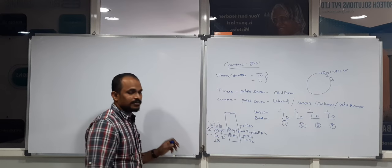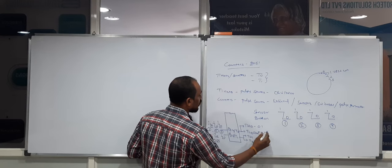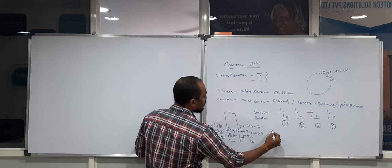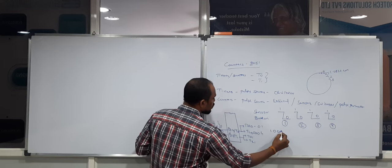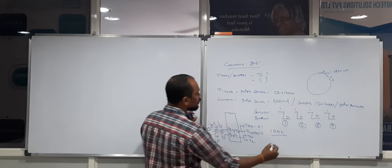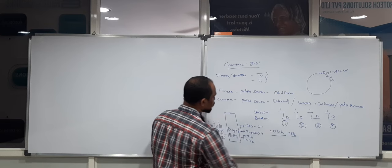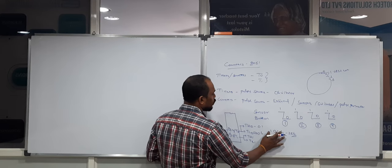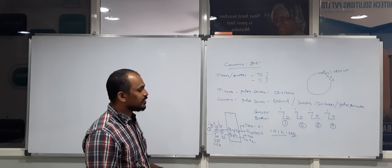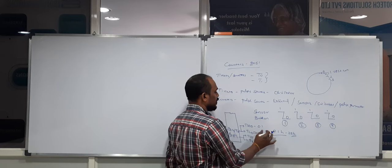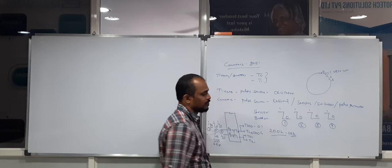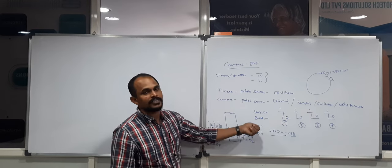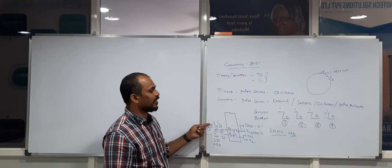On the 256th pulse, the higher byte is incremented by 1 and the lower byte is overwritten with 0x00, giving a combined value of 0x100, which equals 256 in decimal. After another 255 pulses, the lower byte reaches 0xFF again and the higher byte increments to give 0x200. This is how the counter registers change their values according to external pulses.